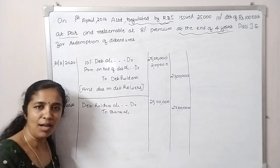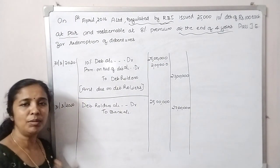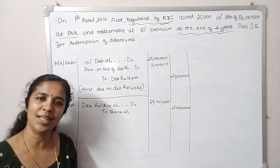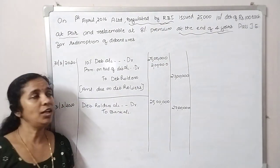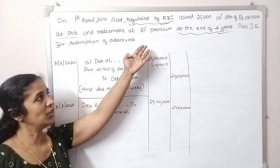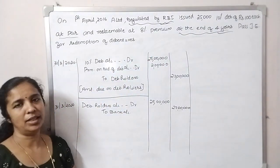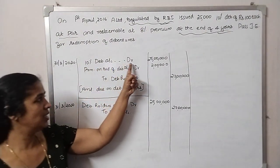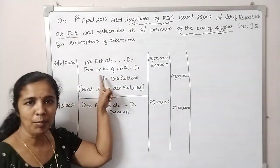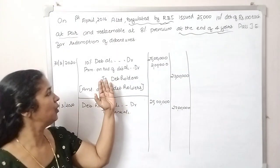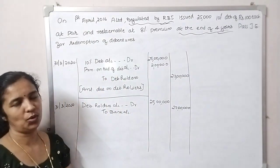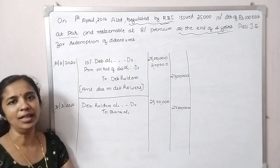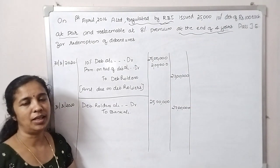Then we can simply pass the redemption account entry. Now the redemption means premium. We can enter the 10% of the account — premium on redemption account — for the whole day. That is the amount due to our entry at standard premium.